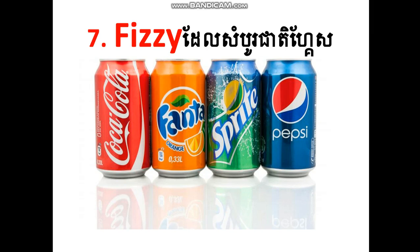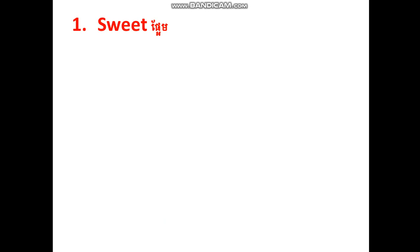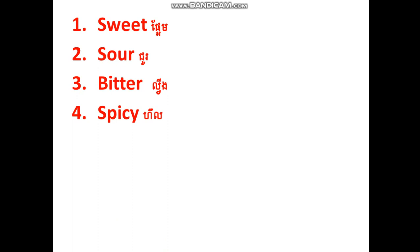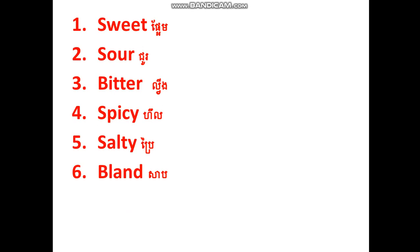These are the seven words. I hope you understand the picture and the meaning and can read the word. Now let's read the word all together with teacher. Ready? Go. Sweet. Again — sweet. Number two: sour. Again — sour. Very good. Number three: bitter. Again — bitter. Very good. And number four: spicy. Again — spicy. Good. Number five: salty. Again — salty. Good. And number six: bland. Again — bland. Good. And the last one: fizzy. Fizzy. Very good.